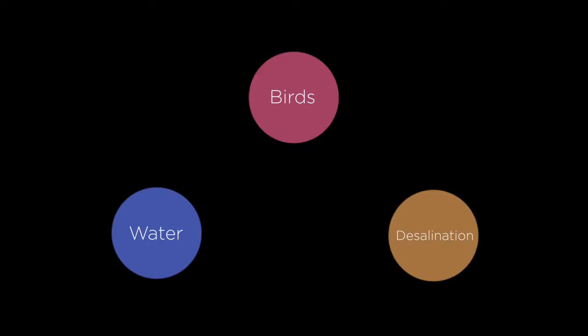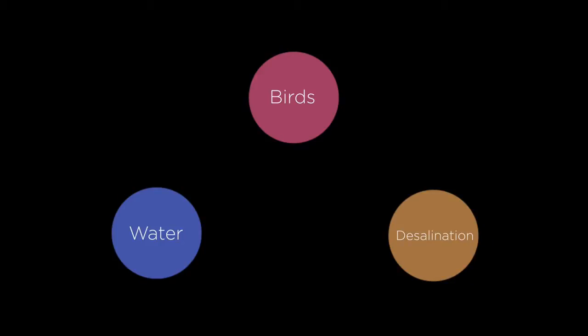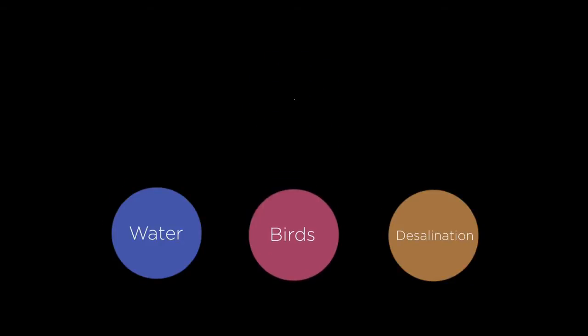So, to begin, he asks a simple question: How do seabirds desalinate water? Behind the scenes, Erasmus expands on this question, generating variations to better represent the concept neighborhood, then returns a collection of concepts associated with the answers.